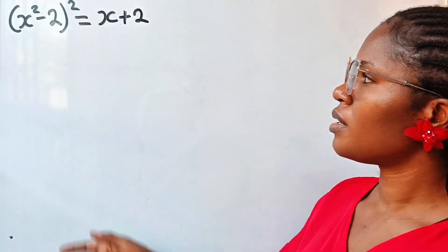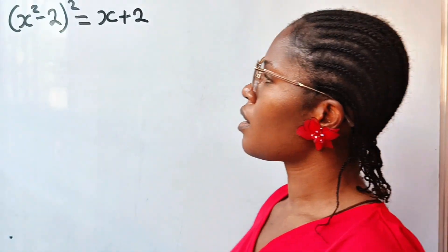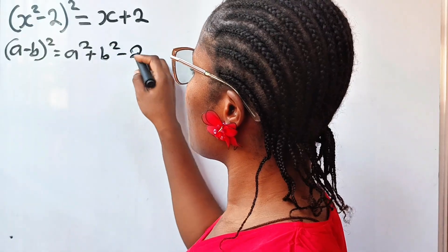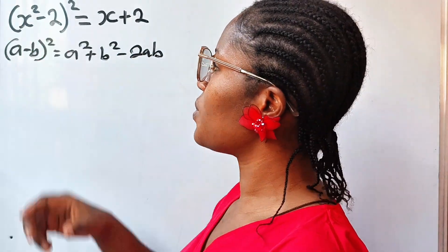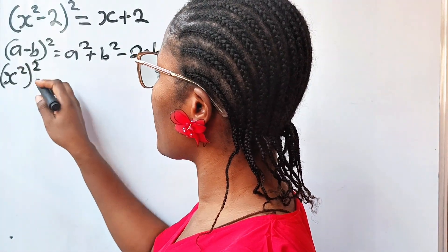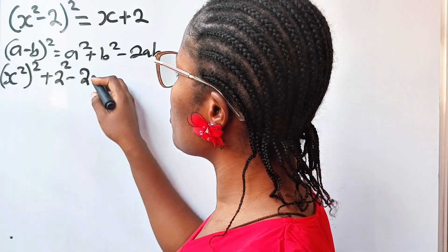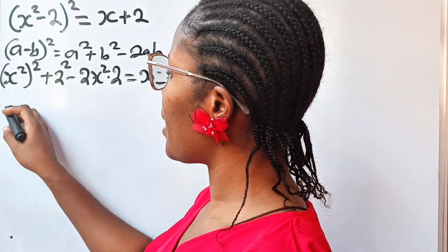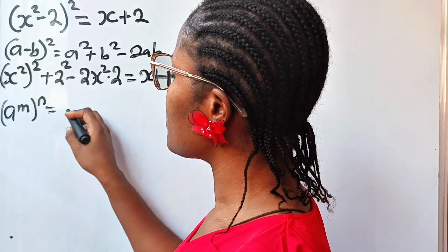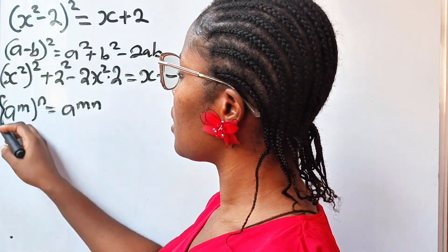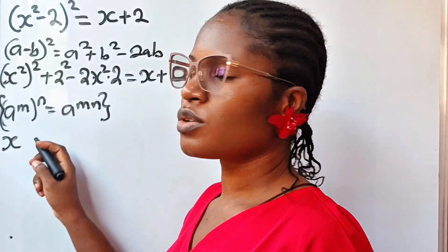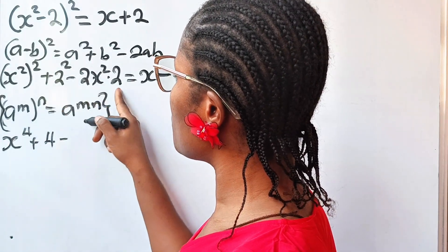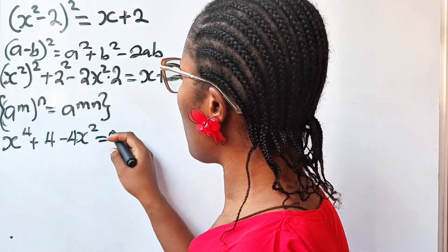Let's tackle the left-hand side. Recall that (a - b)² = a² + b² - 2ab. So this becomes x² all squared plus 2² minus 2 times x² times 2, equal to x + 2. Using the power rule a^m raised to n = a^(mn), x² squared gives x⁴. So we have x⁴ + 4 - 4x² = x + 2.